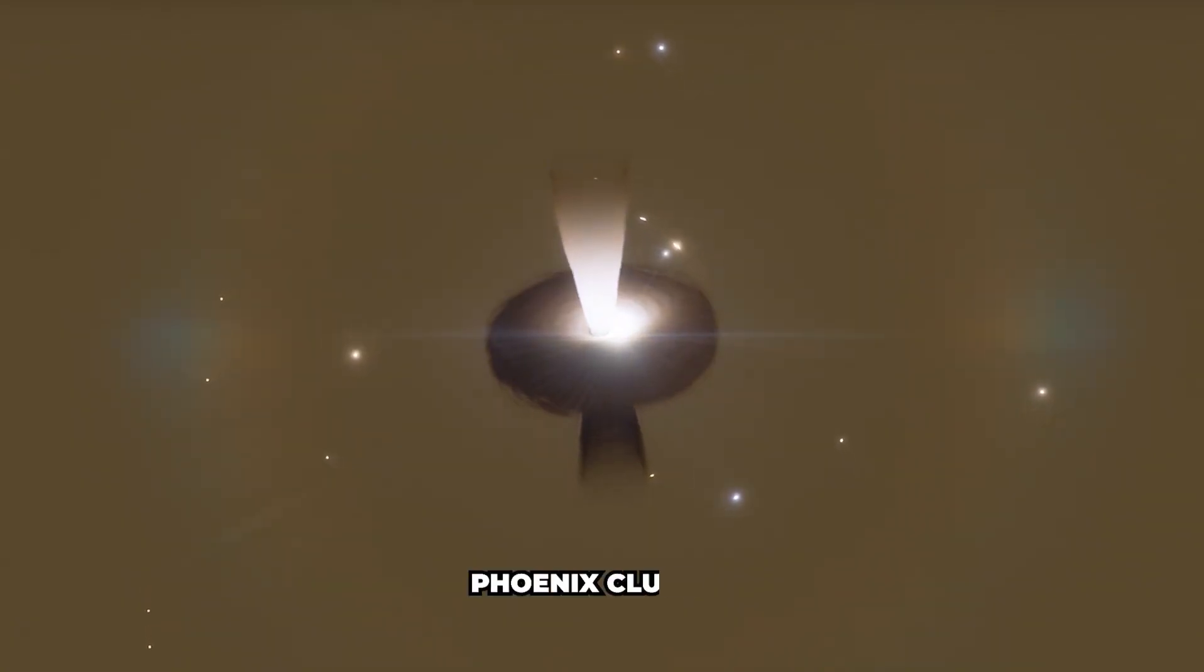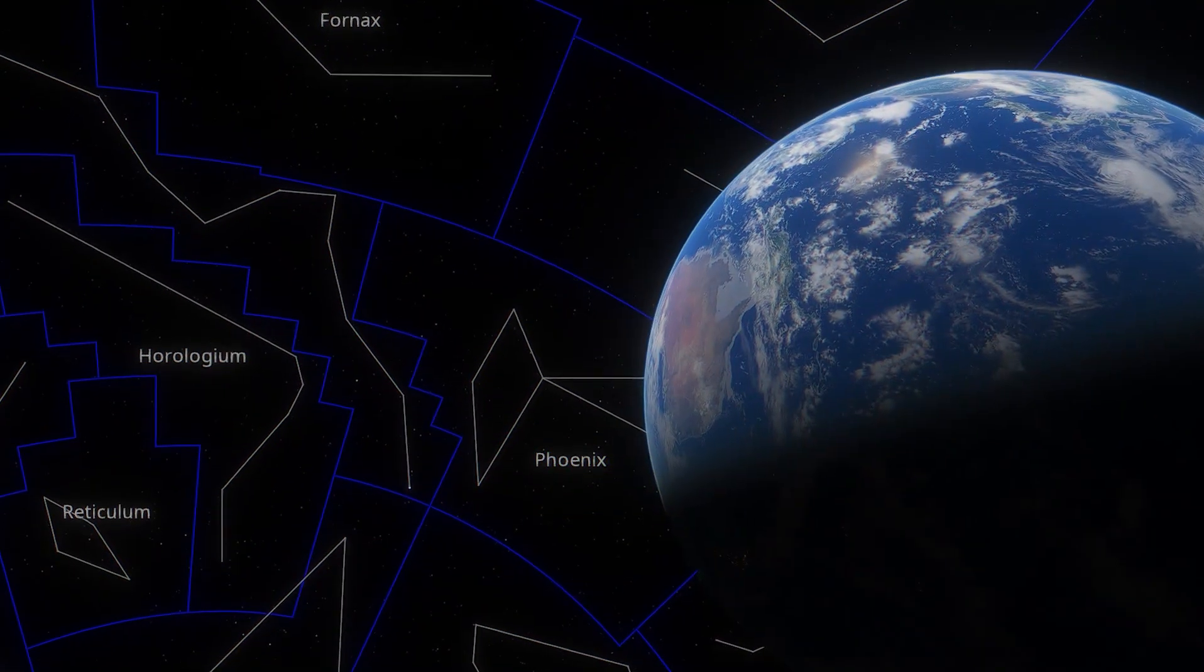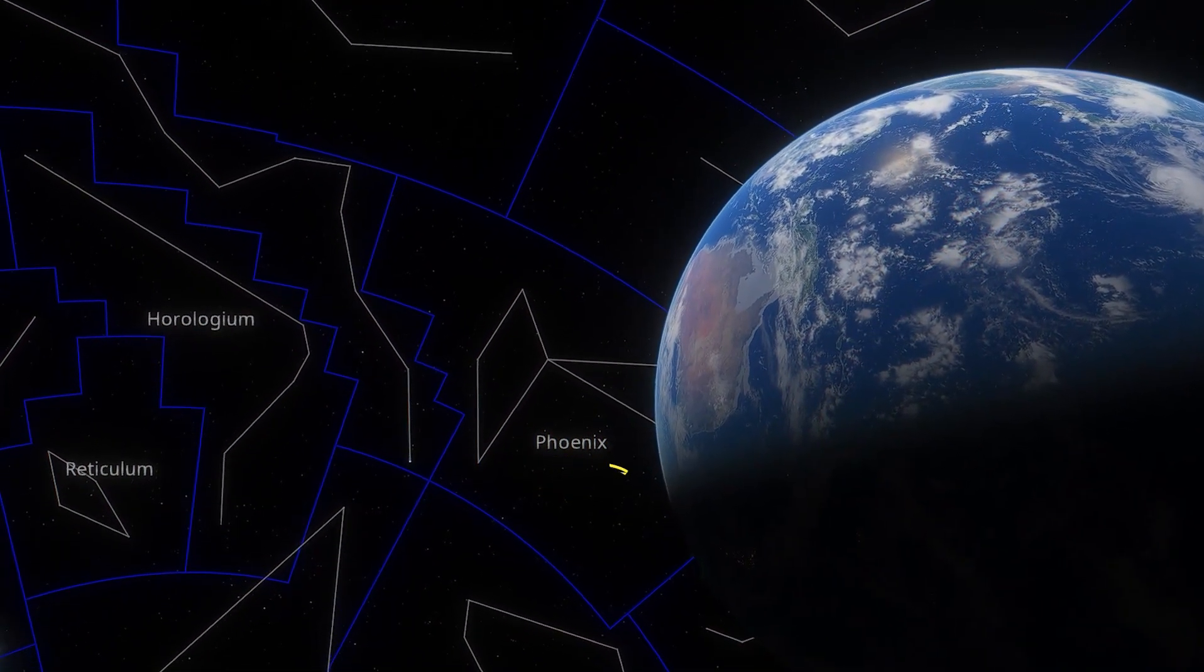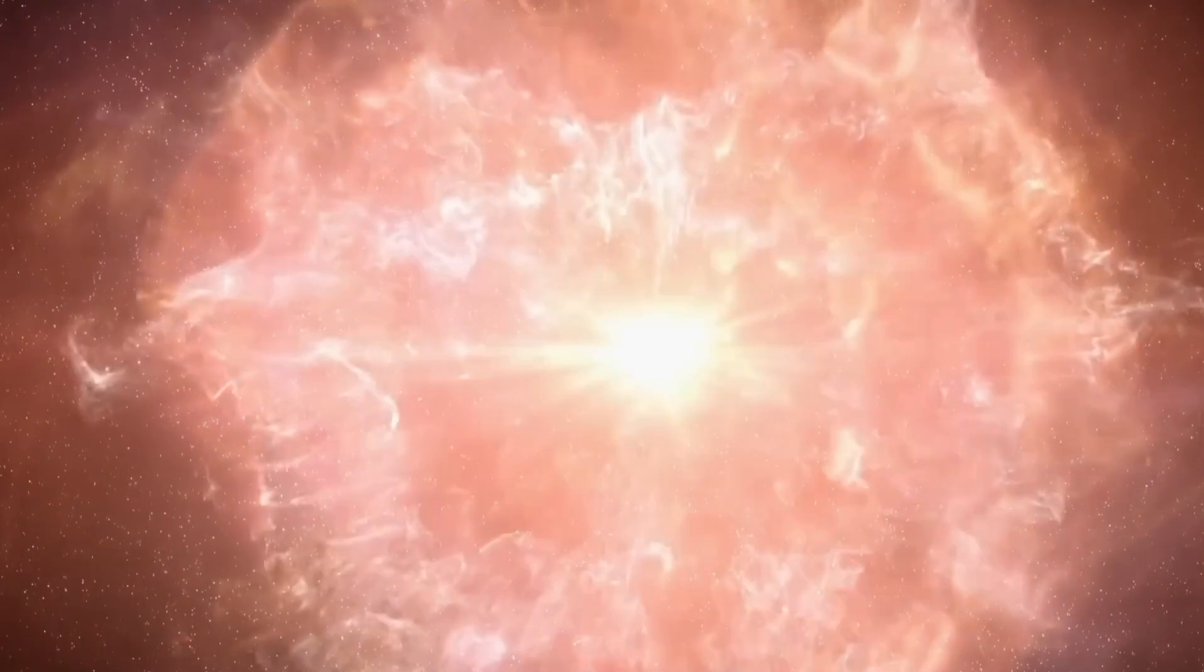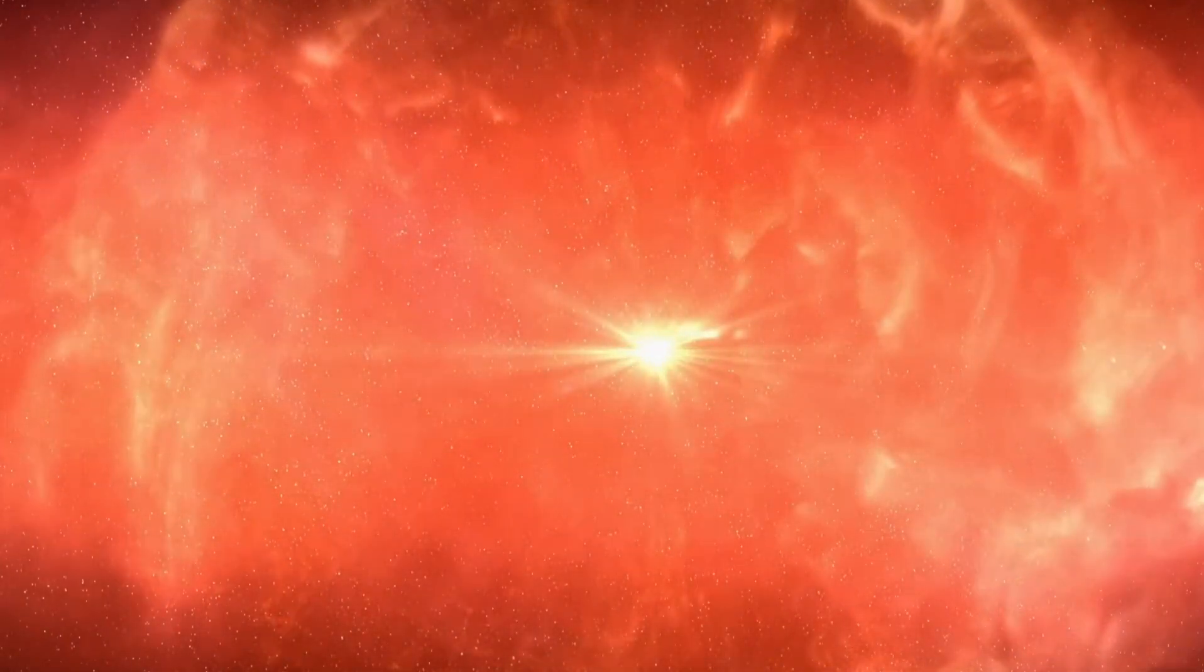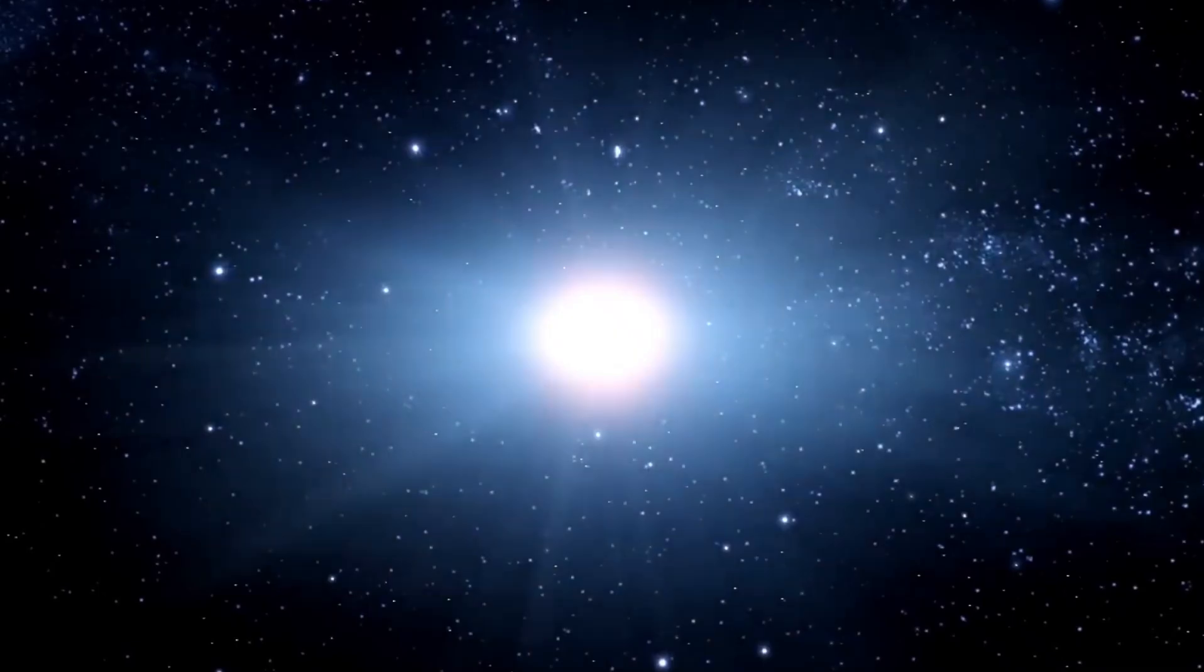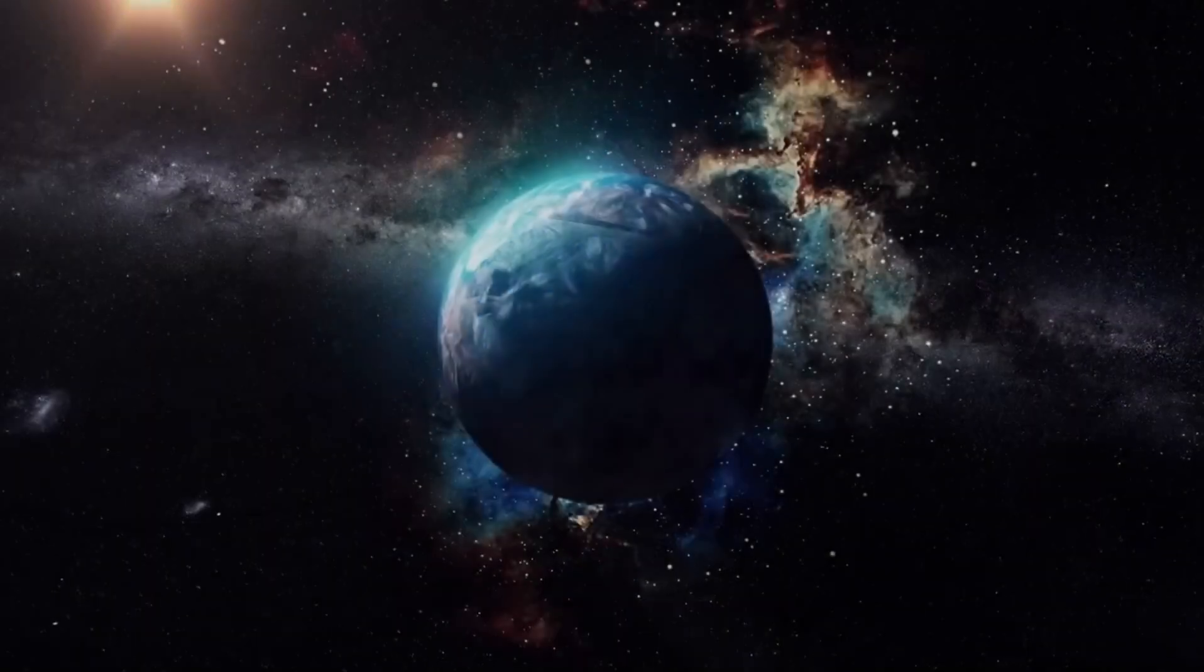Betelgeuse is approximately 600 light-years away from Earth, meaning the light we see from it today left the star about 600 years ago. Interestingly, we don't know its exact distance, but it's in that ballpark. If Betelgeuse had already exploded in a supernova within the last 600 years, the light from that explosion would still be traveling towards us. In other words, it's possible that Betelgeuse has already exploded centuries ago, and we could see the explosion at any time, even tomorrow.